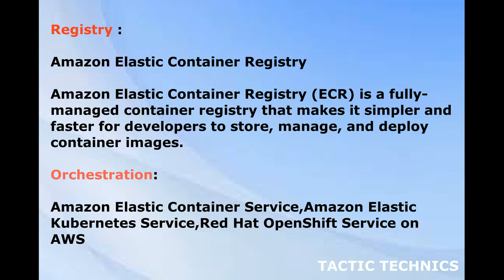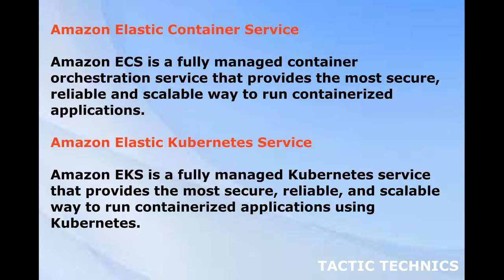Orchestration. Amazon Elastic Container Service. Amazon Elastic Kubernetes Service. Red Hat OpenShift Service on AWS. Amazon ECS is a fully managed container orchestration service that provides the most secure, reliable, and scalable way to run containerized applications.